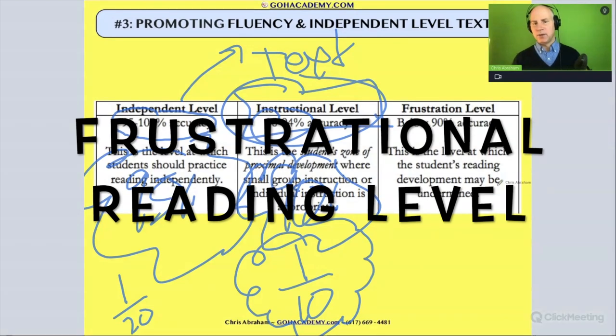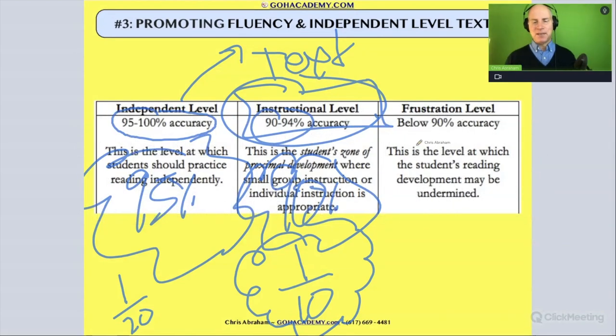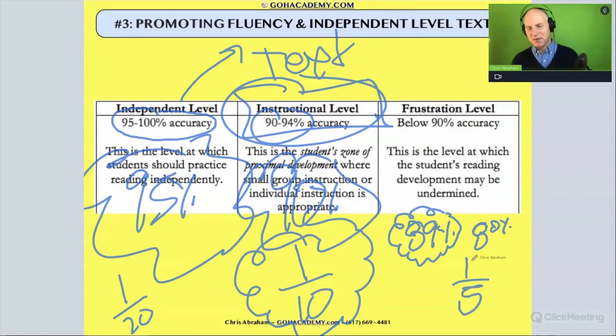And then we have the frustrational level, and this is anything less than 90 percent. So in theory, 89 percent would be frustrational. And what it means is that the student is making enough mistakes that's holding back comprehension, which would be seen as being very frustrating. I mean, imagine if you're getting 80 right—that means you're missing one out of every five words. That would be very challenging for a student.